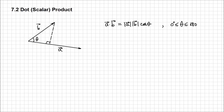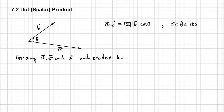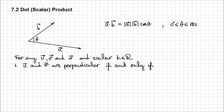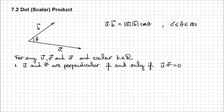Now let's see several properties of the dot product. For any non-zero vectors U, V, and W, and a scalar K which is a real number: the first property is that U and V are perpendicular if and only if the dot product between U and V equals zero. The expression 'if and only if' means the reciprocal is also valid — if U and V are perpendicular, their dot product is zero, and if the dot product is zero, then those two vectors are perpendicular.